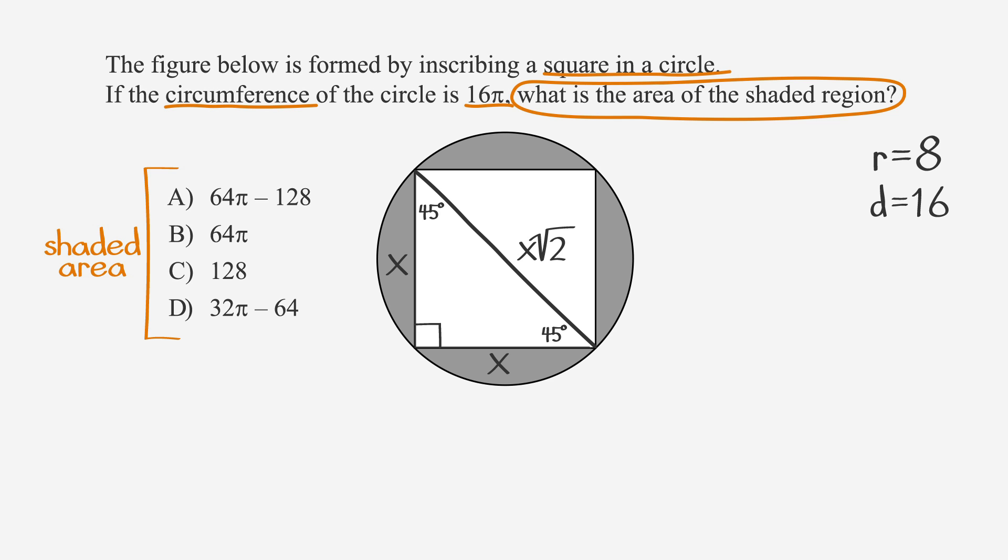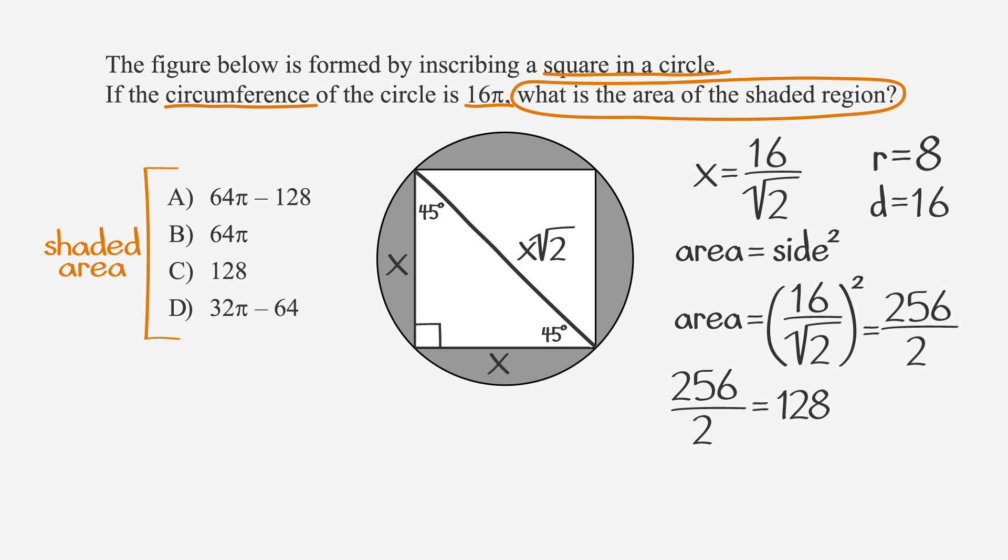Because our hypotenuse is equal to 16, we can set 16 equal to x times the square root of 2. If we solve for x by dividing by the square root of 2, we get that a single side of our square is 16 divided by the square root of 2. We're almost there. Because the area of a square is just side squared, we're going to square 16 over the square root of 2 to find the area. 16 squared is 256. This is a good one to just know, so you don't need to spend time doing work. Root 2 squared is 2, and 256 divided by 2 is 128.